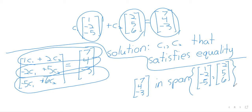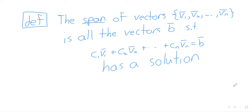We know that (7, 4, -3) is in the span because this equation had a solution. If you ever want to know whether one vector is in the span of other vectors, you just set the equation up, solve it using Gauss-Jordan elimination, and see what happens. If you get a solution, it's in the span. And that is it for section 1.3. Section 1.4 is important but brief — we should be able to finish that this class period.